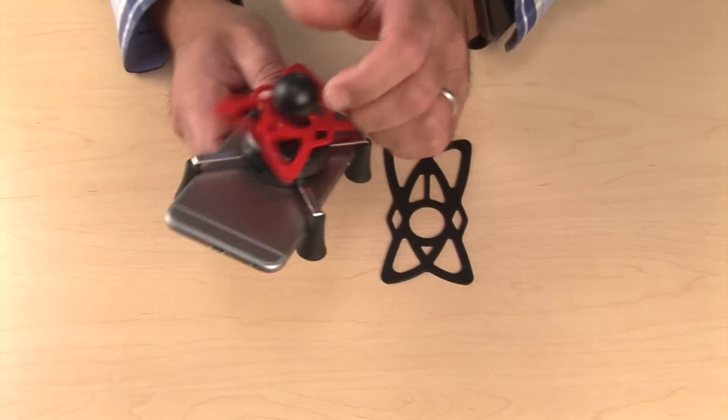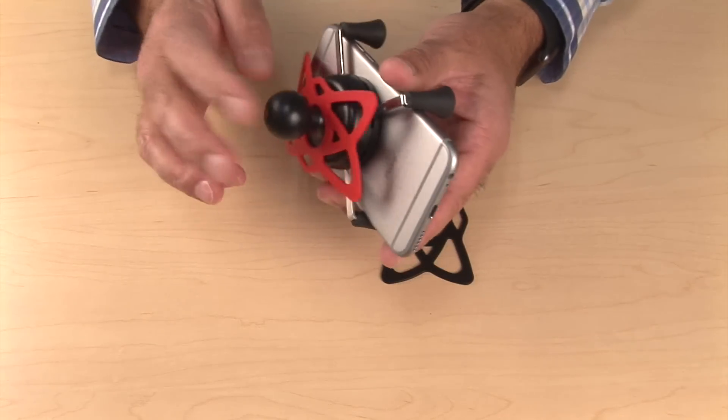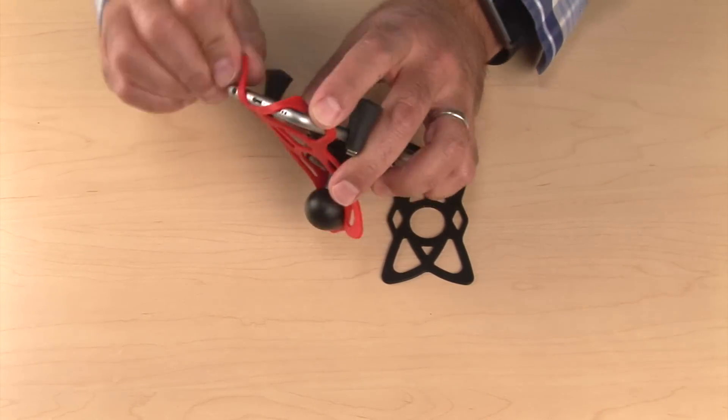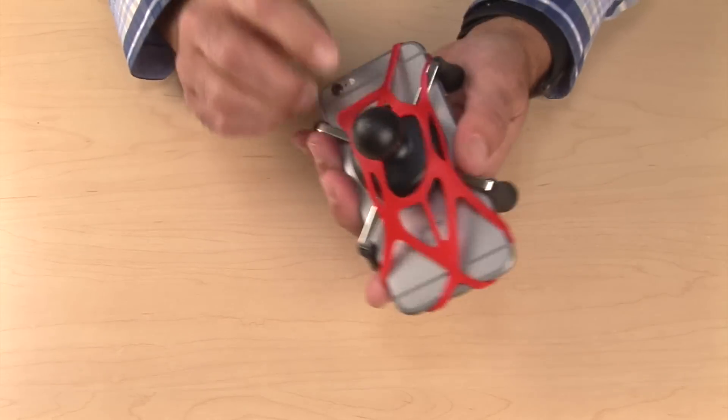All you need to do is place the web grip over the neck of your mount. In this case I'm using the Ram X-Grip, and then wrap the corners around your phone.